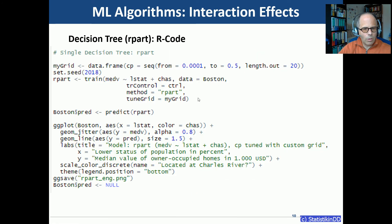Here is the code — method rpart, and here you see the custom grid to tune CP. If I hadn't used that, the model would still work and would also include interaction effects, but it wouldn't be as fine-grained as it was here.